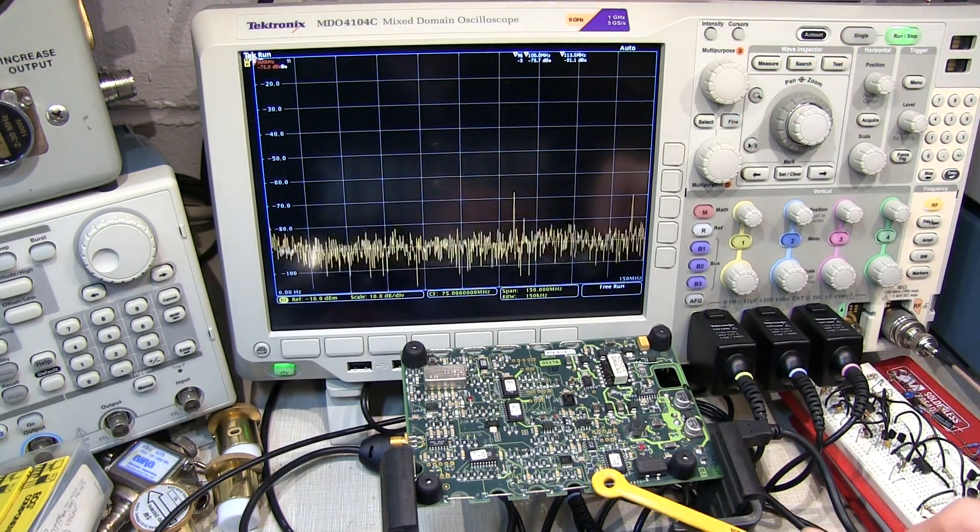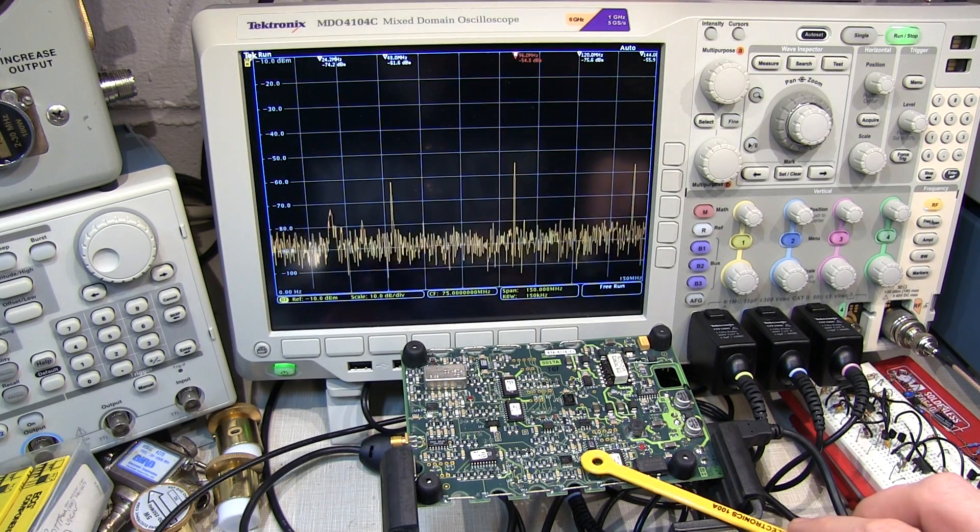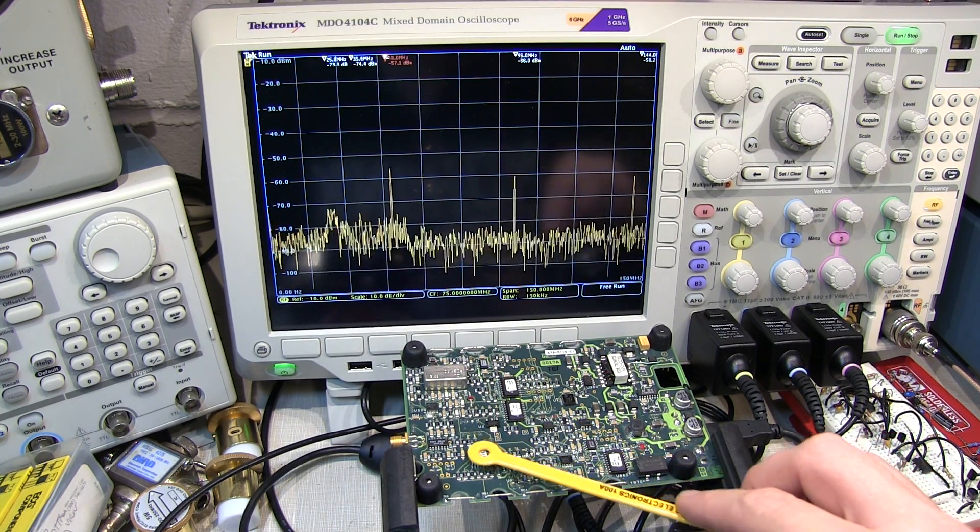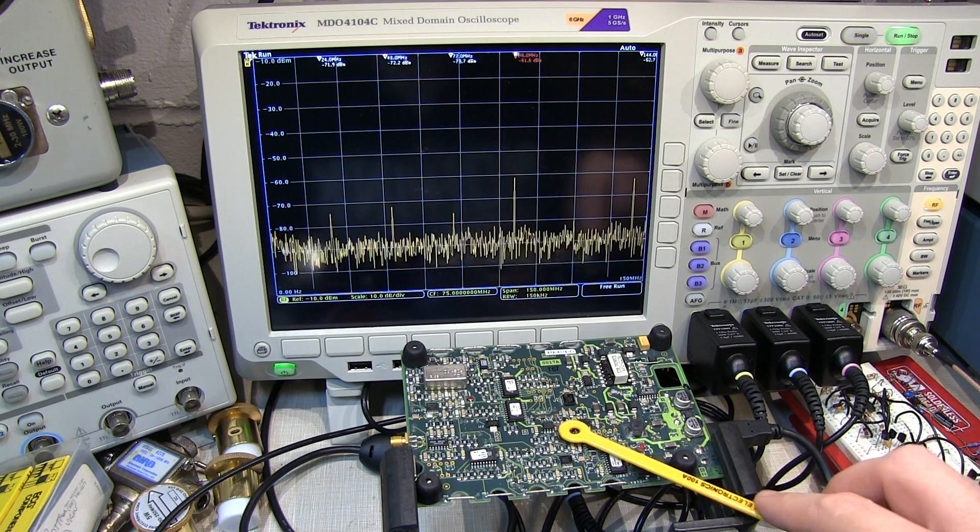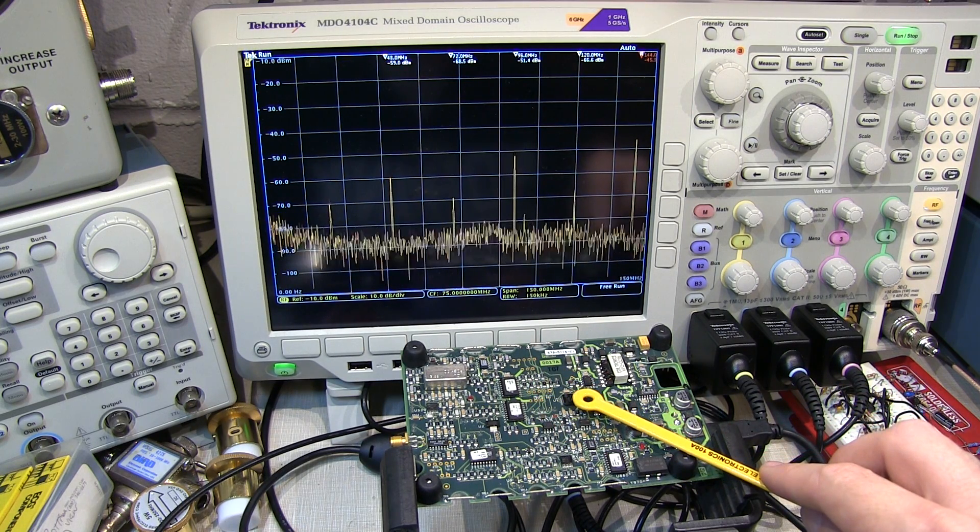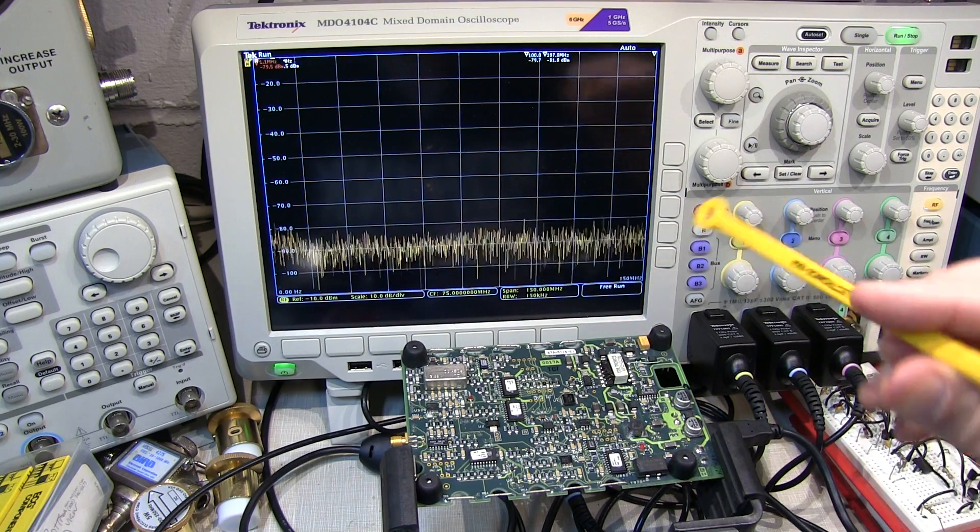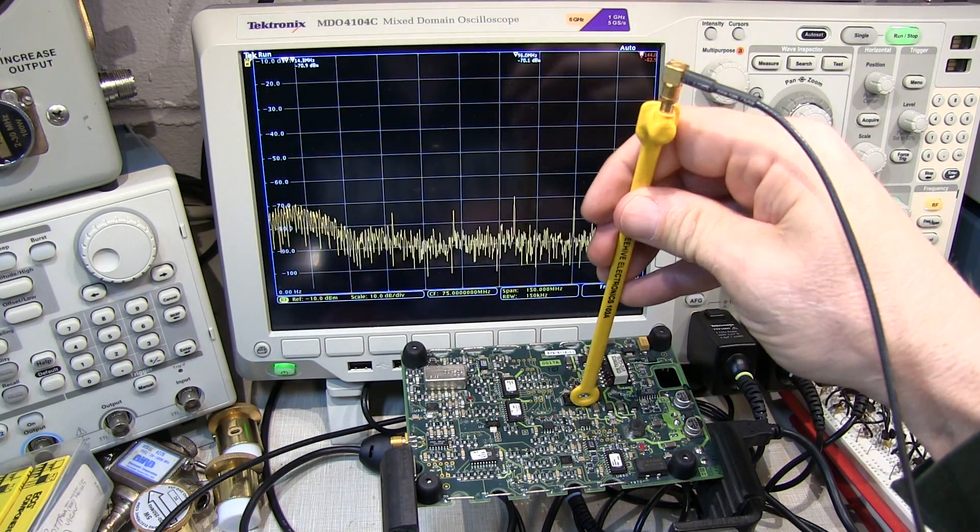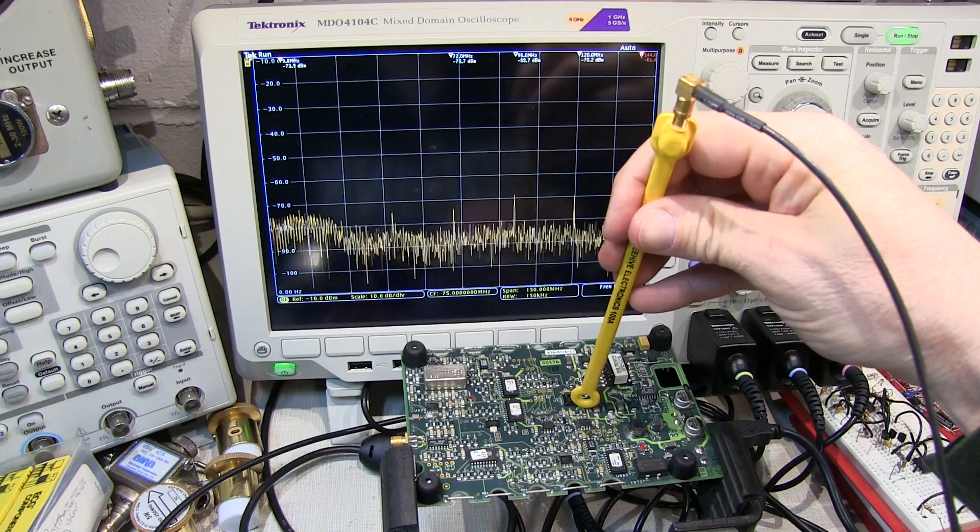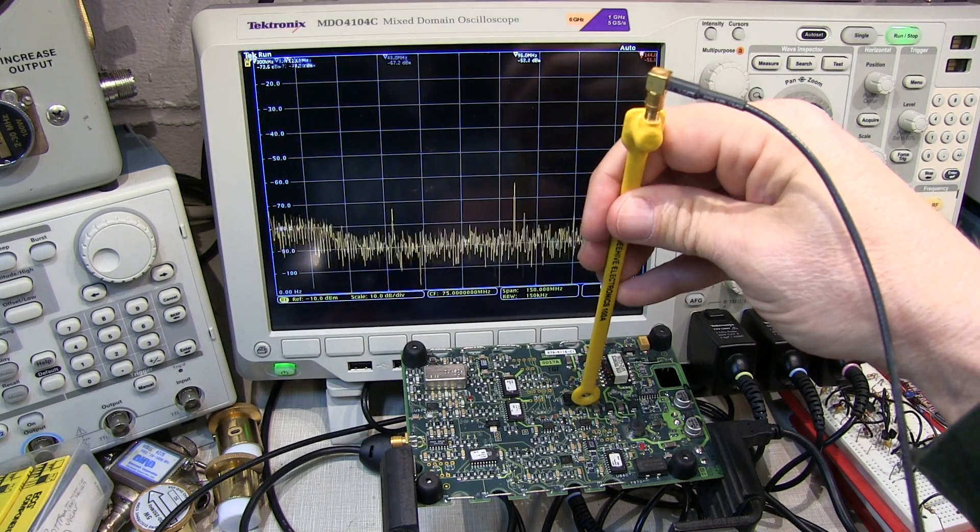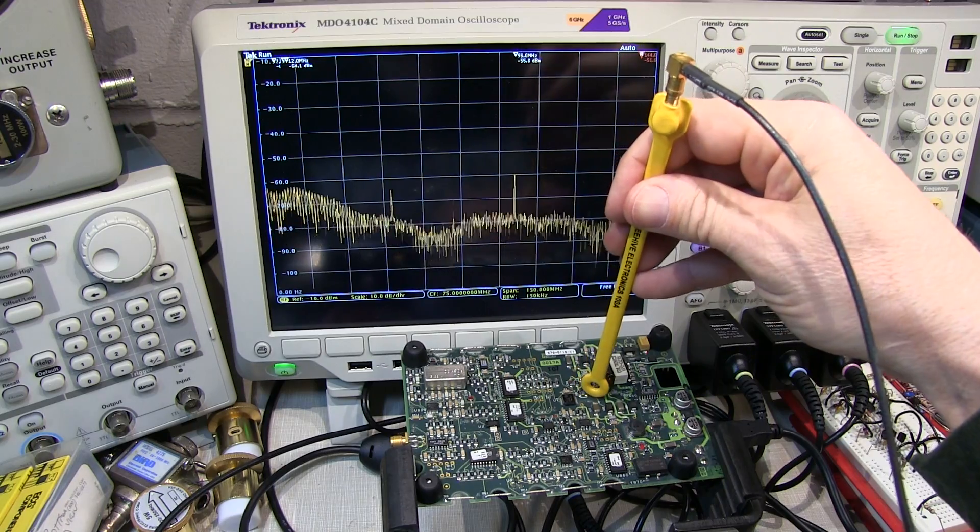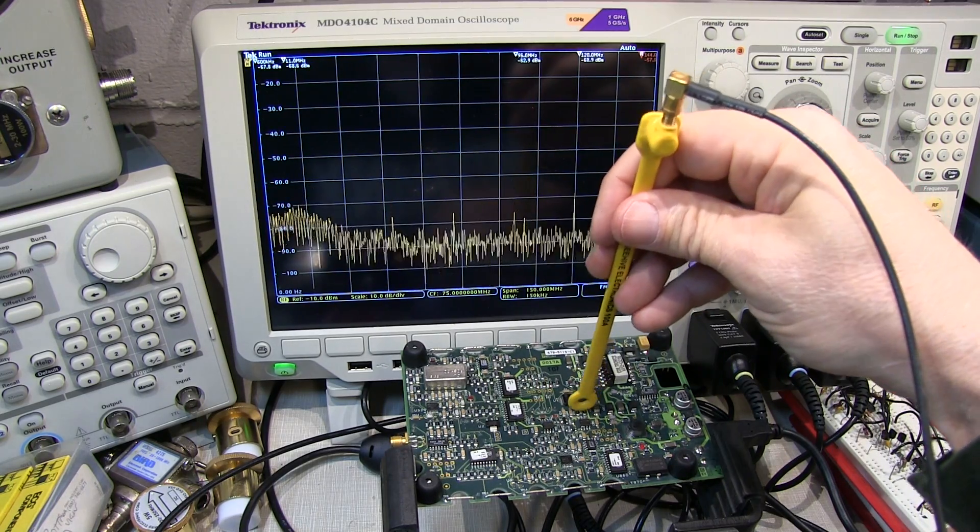So for example, what you would often do is take the H field probe in parallel with the board and scan around looking for the area of the board that is creating the offending emission. Once you've found that, then you can orient the probe vertically so that you can align the plane of the probe to particular traces of the board to see which traces might be carrying that current that are creating that emission.